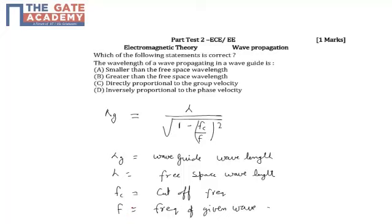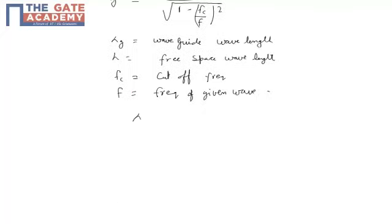Now we know that from the question it is mentioned the wavelength of a wave propagating in a waveguide. From this, what I can say is that 1 over the square root of 1 minus Fc over F whole square will always be greater than 1. That means waveguide wavelength will always be greater than lambda.